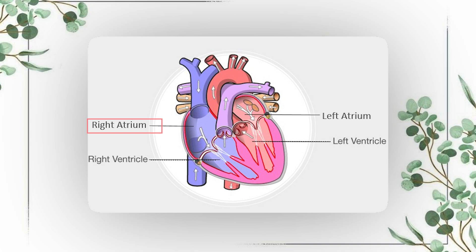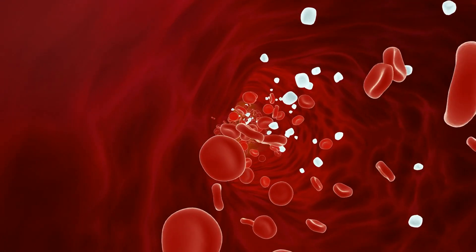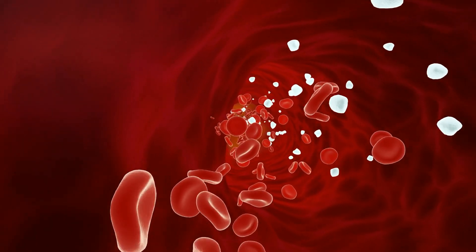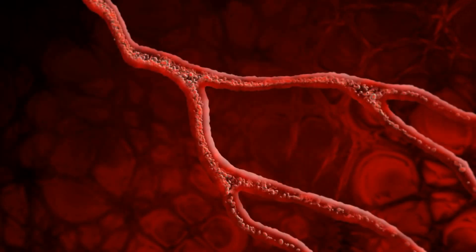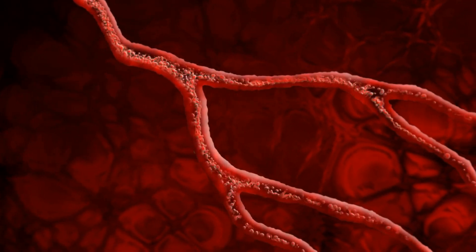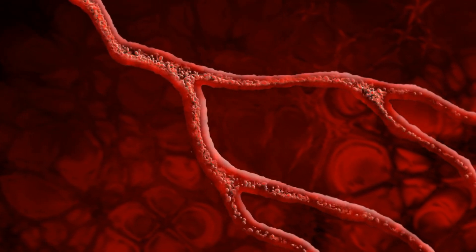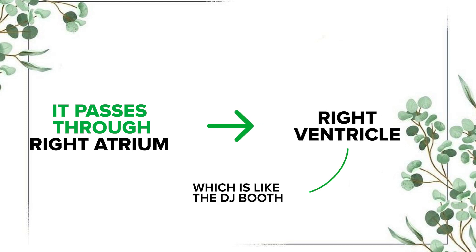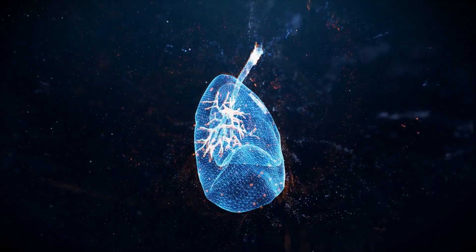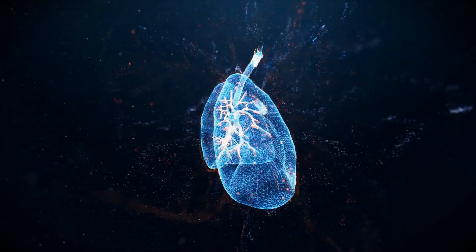Let's start with the right side. Imagine the right atrium is like the bouncer at the club, welcoming blood that's coming in from the body — all tired and low on oxygen. This poor blood has been through a lot, so it passes through the right atrium then heads straight into the right ventricle, which is like the DJ booth, ready to send the blood out to the lungs.